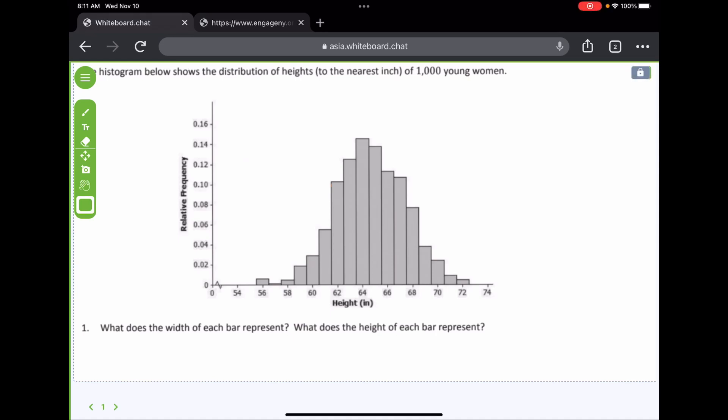It says, the histogram below shows the distribution of heights to the nearest inch of 1,000 young women. So, number one, what does the width of each bar represent? What does the height of each bar represent?